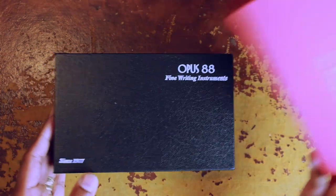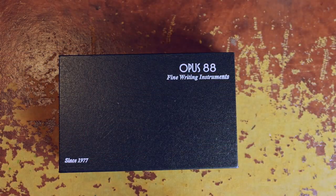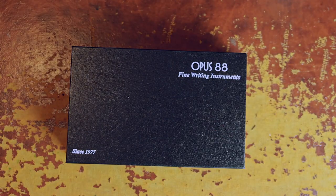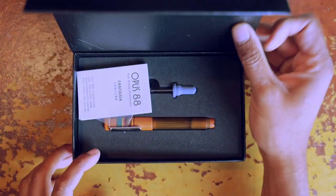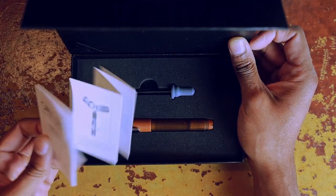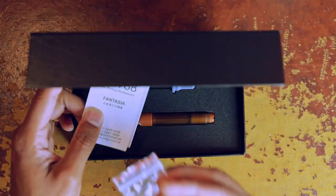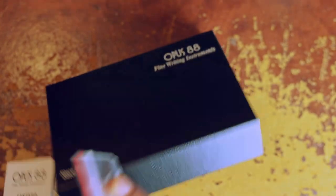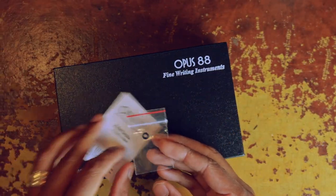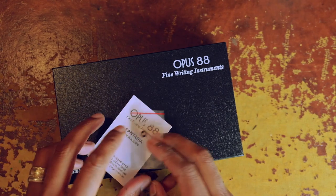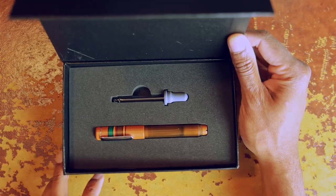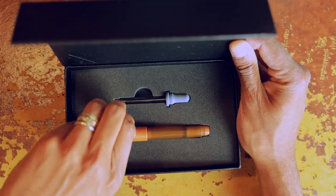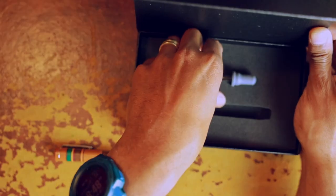Opening this, taking the sleeve off, again, just a regular black box, and opening that up, we have a little instruction manual, looks like we've got an extra O-ring, and the pen itself, with an eyedropper.